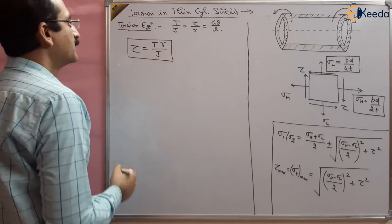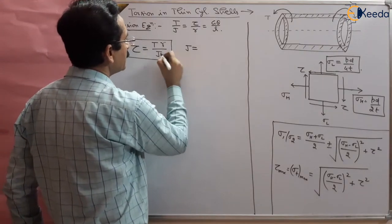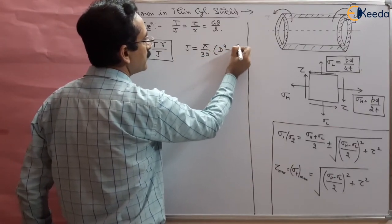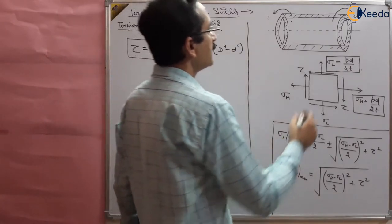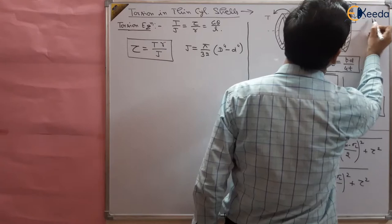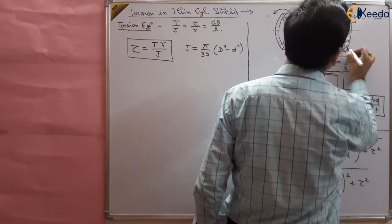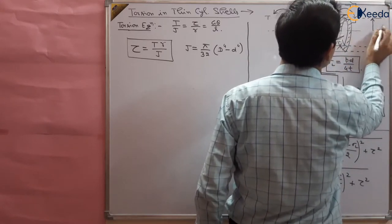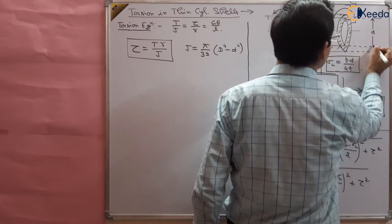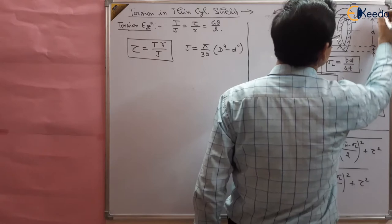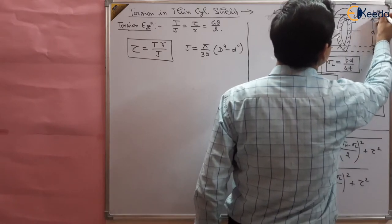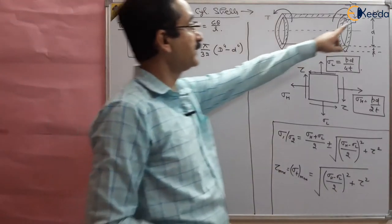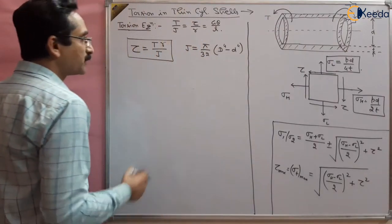For a hollow cylinder, the polar moment of inertia is given by J = π/32 × (D_outer⁴ − D_inner⁴). We are given the inner diameter and the thickness of the thin cylindrical shell.